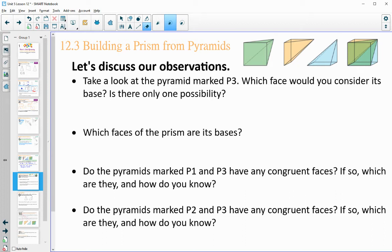So we took a look at those pyramids. Which face would you consider its base? Is there only one possibility? For these pyramids, there is only one possibility, because the base needs to be opposite of that apex. All those other sides go to the point, so the base would be across from that or opposite of that. So in each of these pyramids, that square or rectangular base had to be the base.